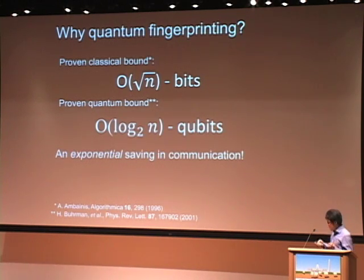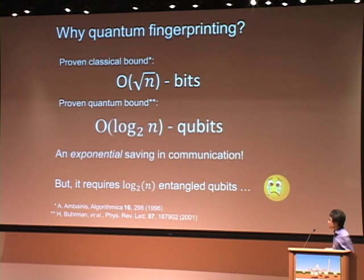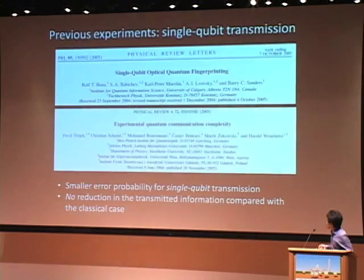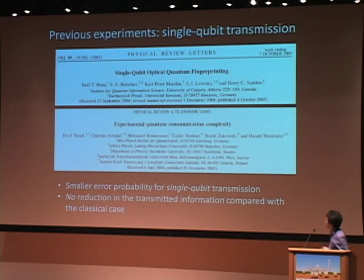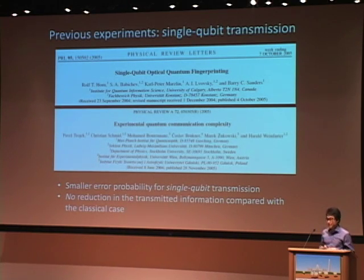This is the theory. Can we do this in experiment? We find the challenge, because the initial proposal requires log n highly entangled qubits. We know it's very challenging for experimentalists to create a large number of entangled qubits. That's why it restricted previous experiments to single qubit transmission only. For example, two experiments in 2005 showed a smaller error probability compared to the classical case, but they only restricted to single qubit transmission and did not show any reduction in the transmitted information.